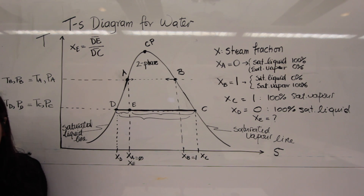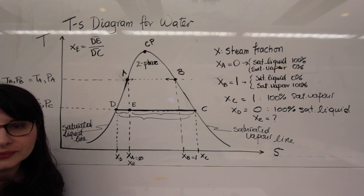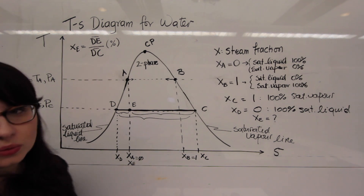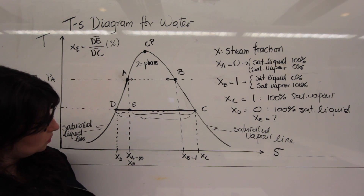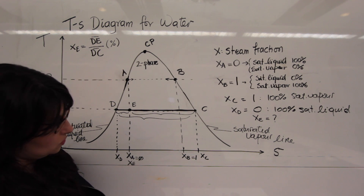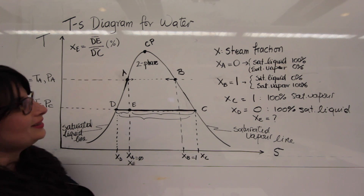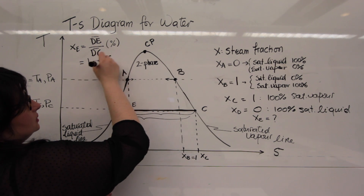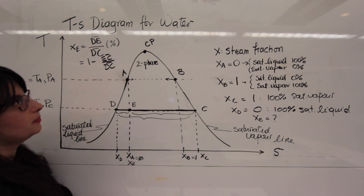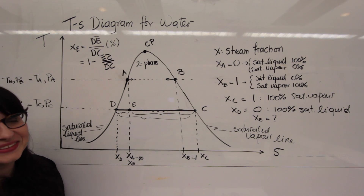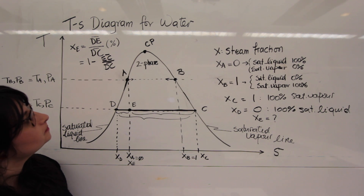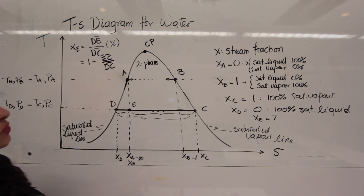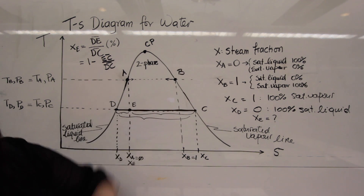Anton has a question. He notes that since X_E is defined as a ratio between these two lines — being a percentage — you can also say it's 1 minus EC over DC. That's correct. Let's now put this in relation to the steam tables.